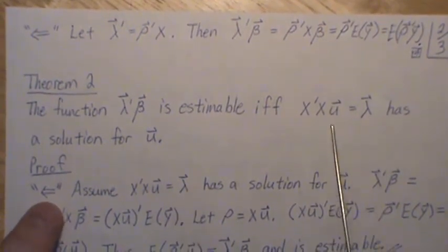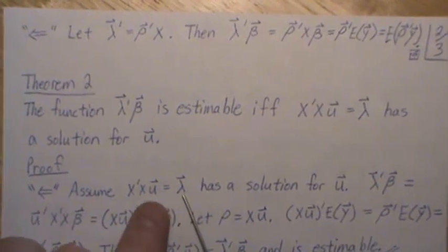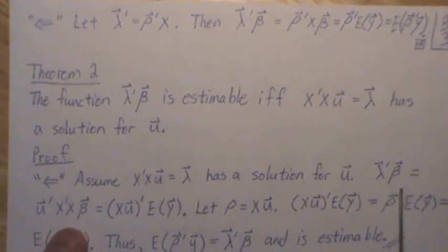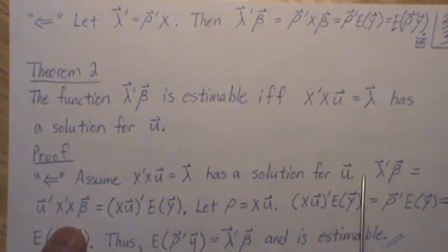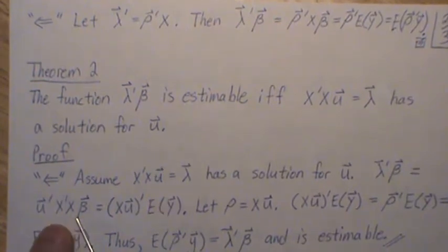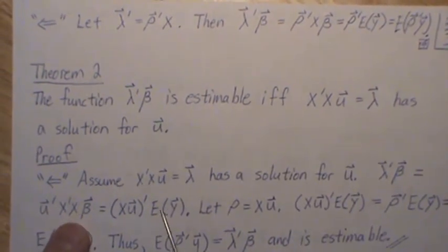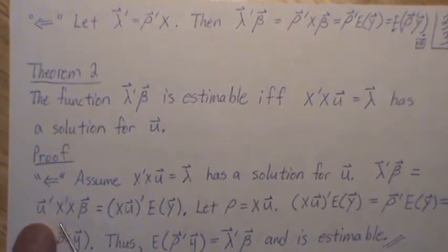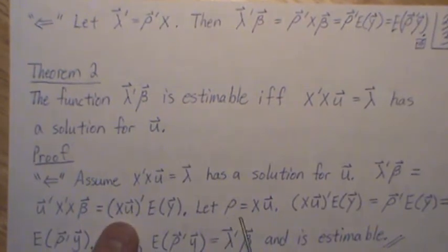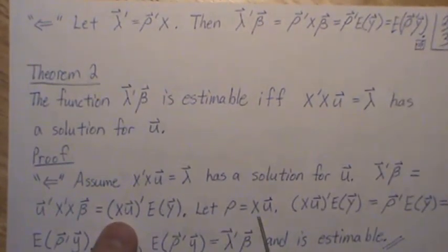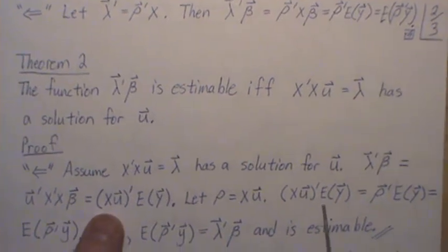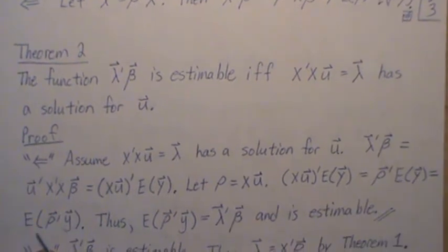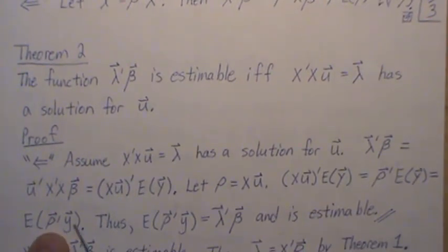Let's assume this has a solution for u and prove it's estimable. Look at lambda transpose beta; since lambda can be replaced with x transpose x times u, we transpose this and get this. Then x beta is the expected value of y, and untransposing gives us this — let rho equal x u. Then the expected value of this linear combination of the y's does equal lambda transpose beta, so it's estimable.